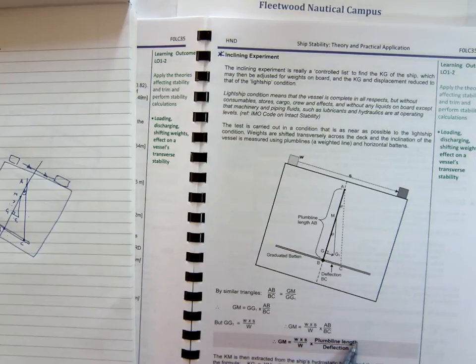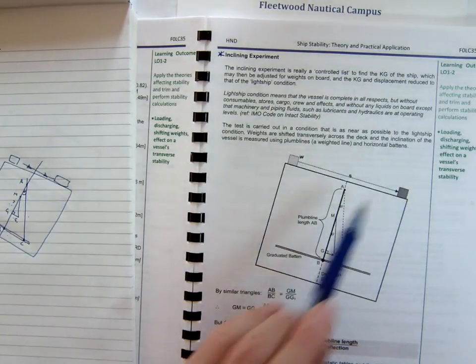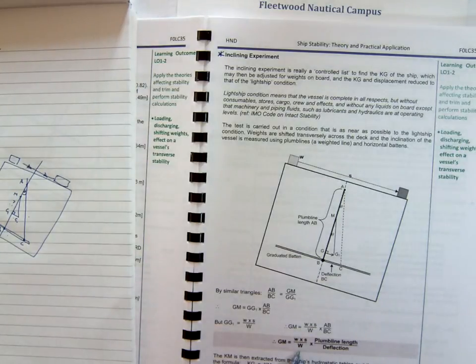We know the plumb line length because we can measure it before we do the experiment. We measure the deflection, so we know this value. We know the weight. We know S, which is the deflection. We know the total weight of the vessel. Therefore, we can find the gm.